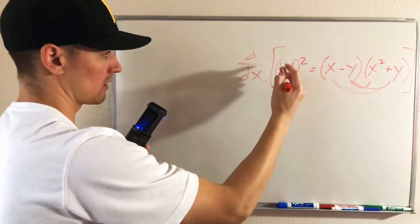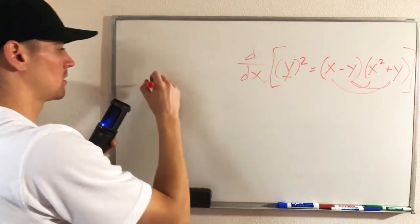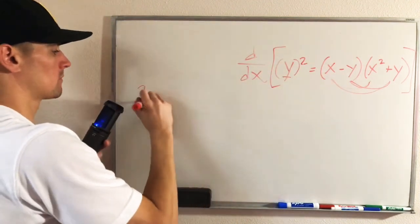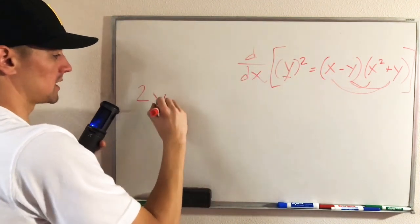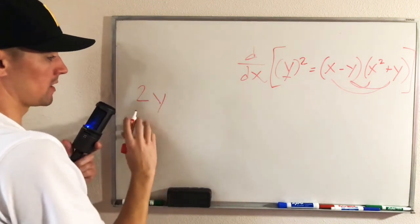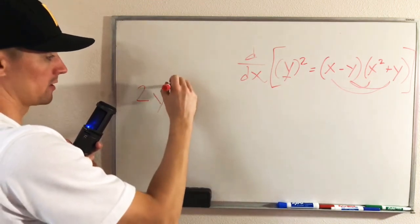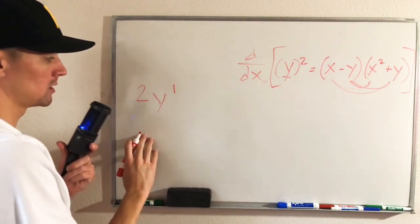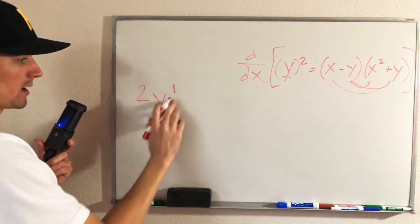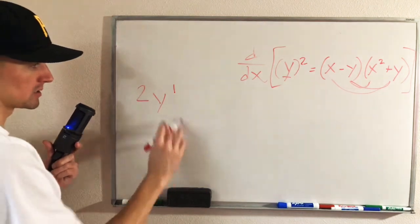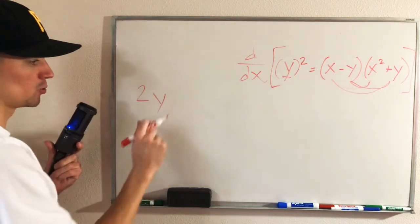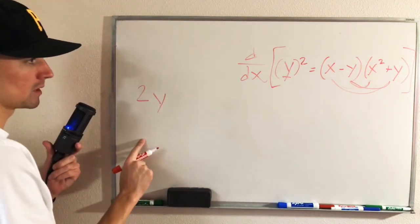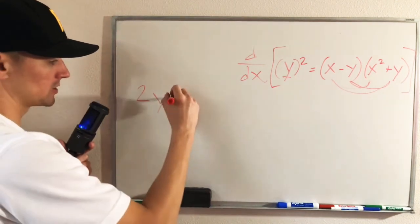Bring the two down in front and leave the inside the same. And then by the power rule, we also need to lower our power by one. So two y to the one is just the same as 2y.